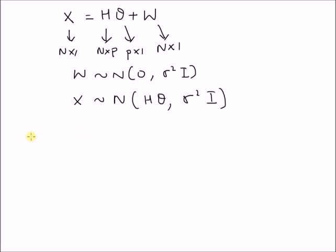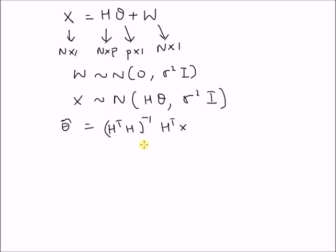Now, from a previous video, we know that the estimator for the parameter vector theta — that is, theta hat — is given by H transpose H inverse H transpose x. This is the minimum variance unbiased estimator of theta. In this video, we want to derive the probability density function of this estimator theta hat.